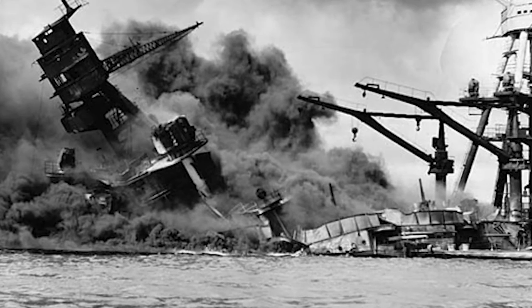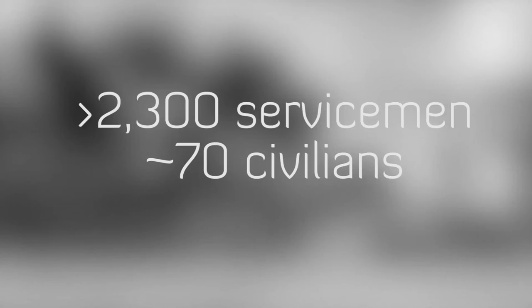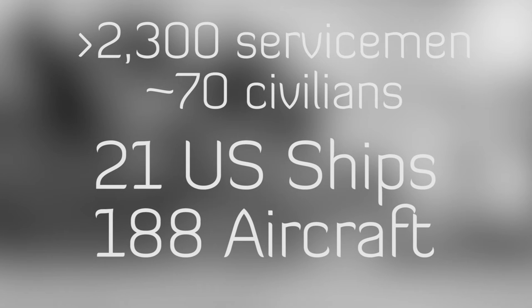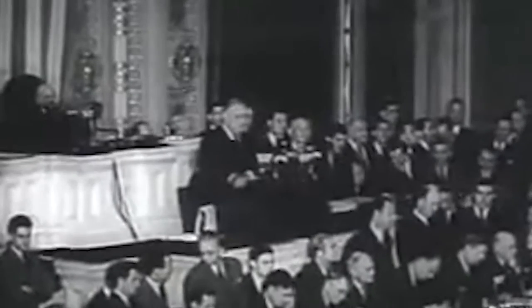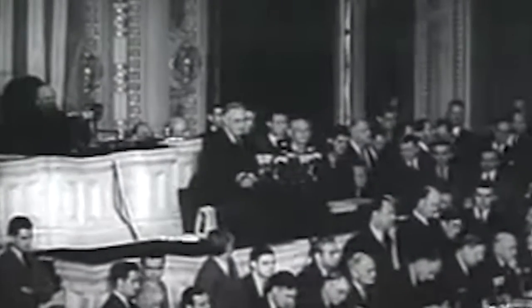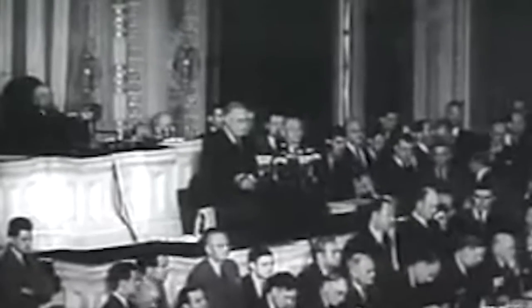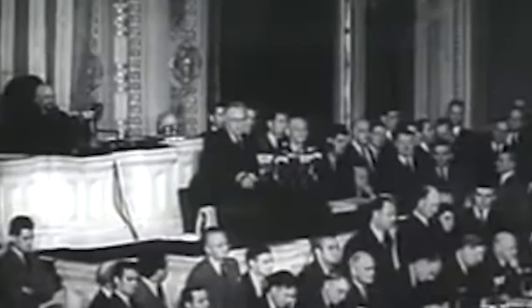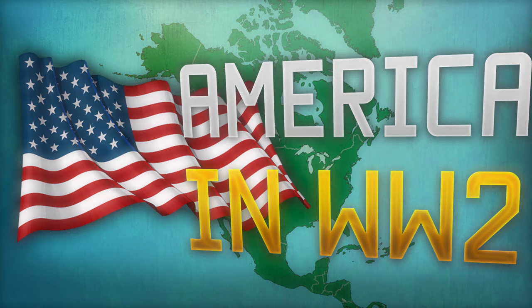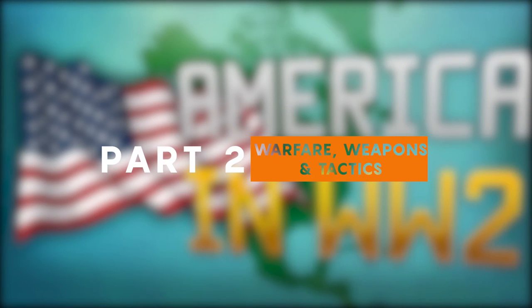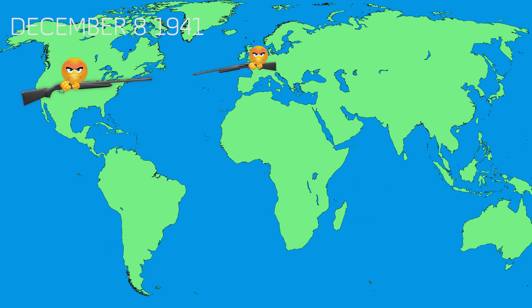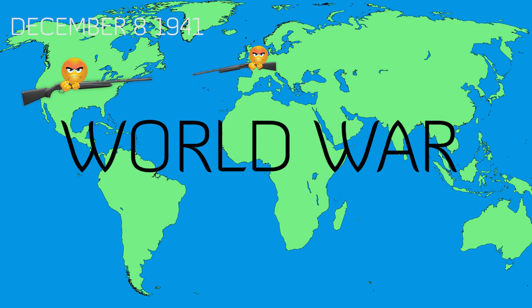Pearl Harbor was unfortunately bombed by Japanese planes on December 7th, 1941, killing more than 2,300 servicemen and 70 civilians. 21 US ships were sunk or damaged, and 188 aircraft were destroyed. President Roosevelt called this day, December 7th 1941, 'a date which will live in infamy.' Japan bombing the US naval fleet at Pearl Harbor meant America getting involved in World War 2. The day after Roosevelt's speech declaring war, Germany declared war on them too, meaning a full-on world war now that America had joined the Allies.